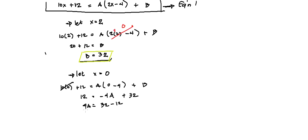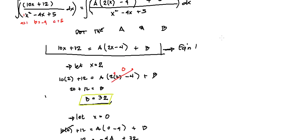So negative 4A is 32 minus 12. This is equal to, we have 32 minus 12 divided by negative 4, we have 5. So A is equal to 5. So A is equal to 5 and our B is equal to 32.